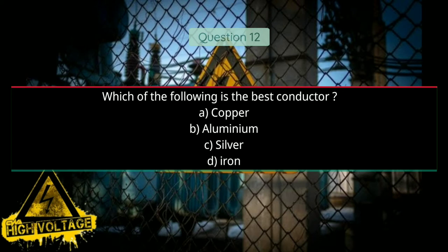Question number twelve: Which of the following is the best conductor? Option A: copper, Option B: aluminium, Option C: silver, and Option D: iron. Correct answer will be C, silver.